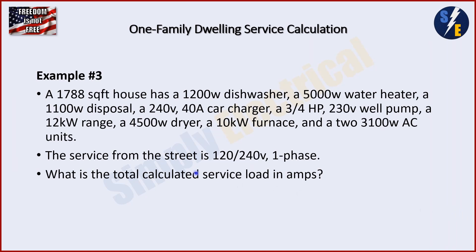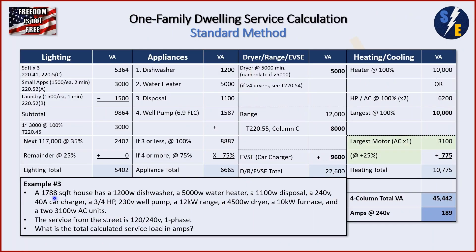Example three: we have a 1,788 square foot house. 1,788 times 3 is 5,364. Adding our small appliances and laundry, we get a subtotal of 9,864. Take 3,000 out of there, leaving us with 6,864. 35% of that is 2,402. Add 2,402 plus 3,000 and we get 5,402 for our lighting total.